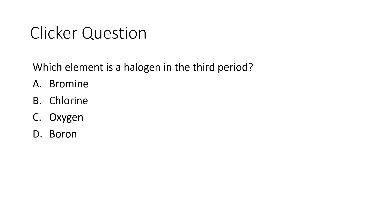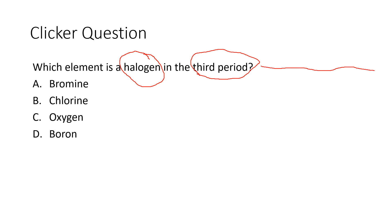This question is asking: which element is a halogen in the third period? You have to know where the halogens are in the Periodic Table as well as identify the third period. A period is a horizontal row, so the third period is the third one down from the top. The halogens are group 17. So we're looking for the element in the third row that is in group 17 — and that is chlorine. Chlorine is on the third row of the table in the halogens.